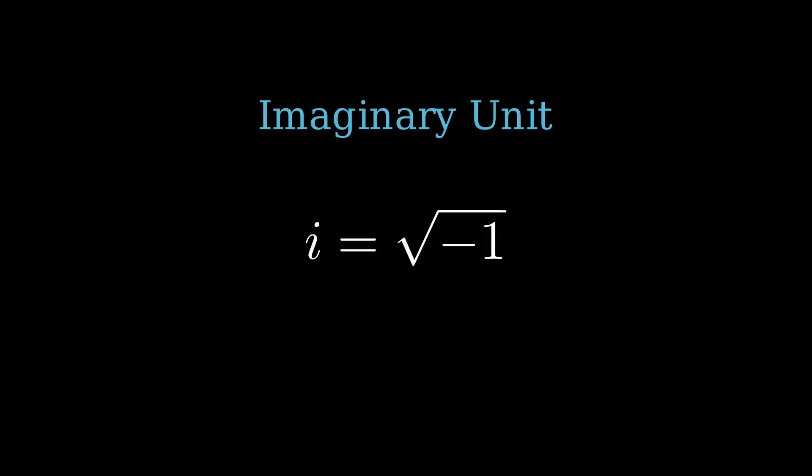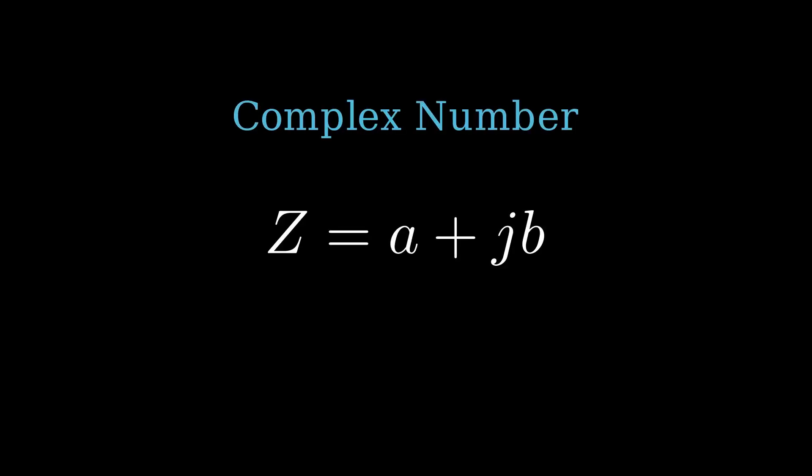Let's start by understanding what the imaginary unit is. In essence, i is equal to the square root of negative 1. In electrical engineering, the convention is the letter j. A complex number can be represented by the expression below.